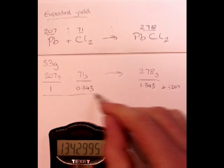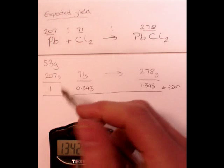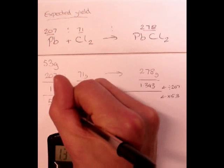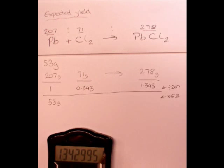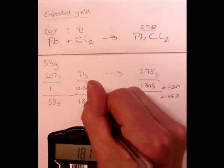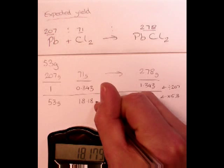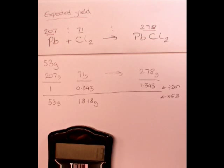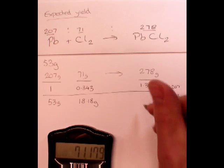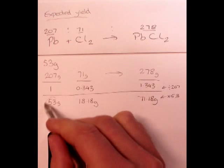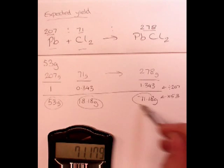Now, the next line, I now need to convert one to 53. So, I'm going to multiply on this line by 53. That will give me 53 grams of Pb and 0.343 multiplied by 53 equals 18.18 grams of Cl2. And 1.343 multiplied by 53 equals 71.18 grams of PbCl2.